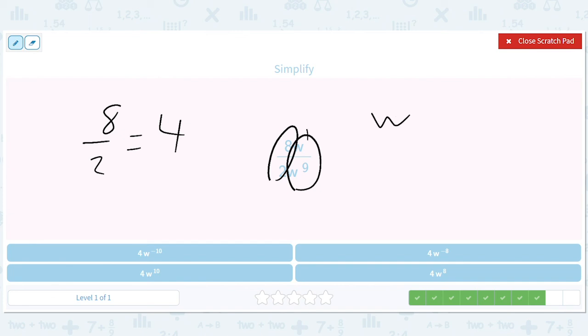w is w to the first power. So w to the 1 minus 9, which gives us w to the negative 8. So we have 4w to the negative 8.